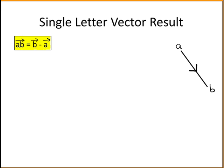We can write any two letter vector in terms of single letter vectors using this result. So the vector AB can be written as the vector B minus A, and now we're just going to prove that.